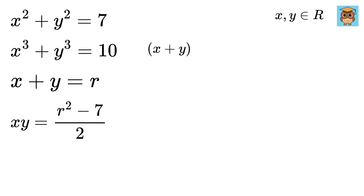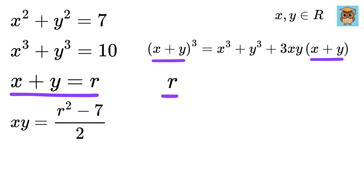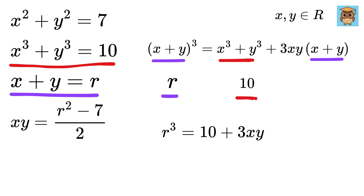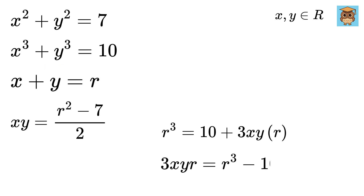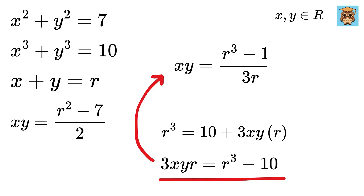Now we know that x plus y whole cube equals x cubed plus y cubed plus 3xy times x plus y. Substituting x plus y as r and x cubed plus y cubed as 10, we get r cubed equals 10 plus 3xy times r. So, 3xy times r equals r cubed minus 10, which gives xy equals r cubed minus 10 over 3r.